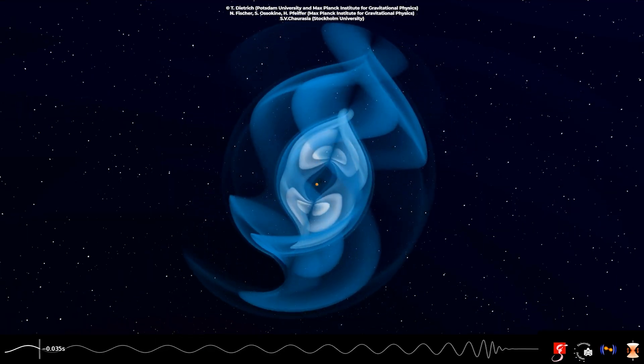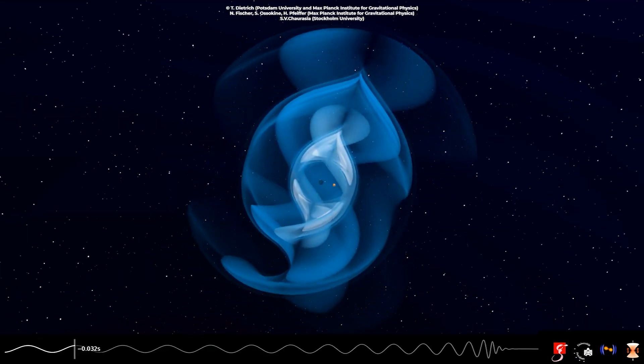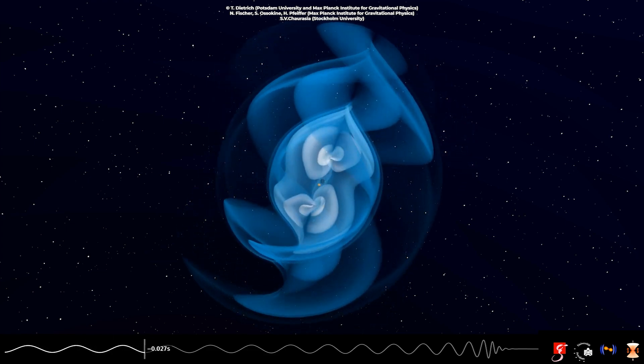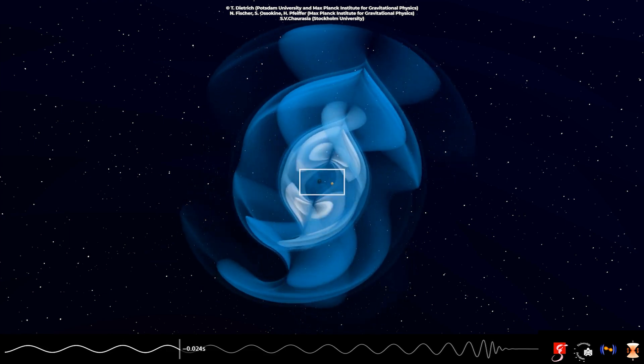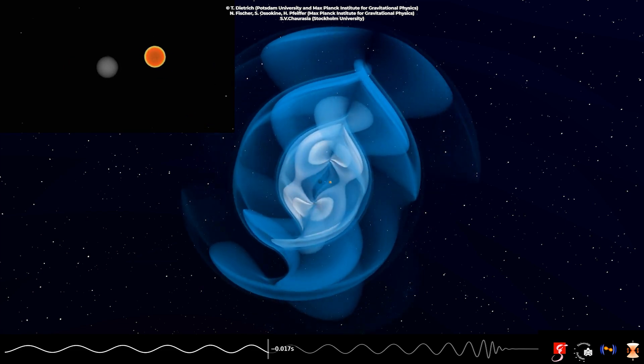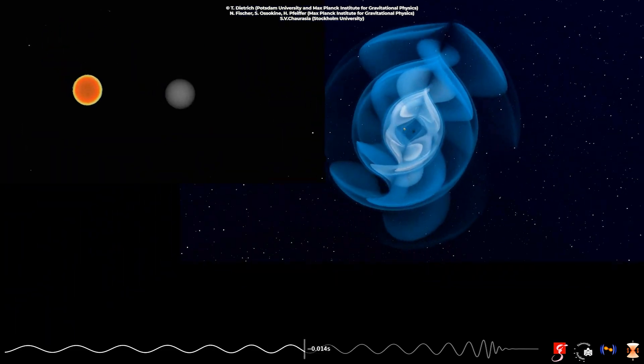A black hole nine times the size of our sun crashed into a neutron star twice as massive as our parent star. It took 900 million years for the waves to reach Earth at the speed of light.